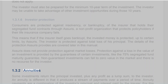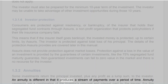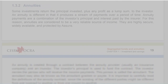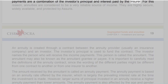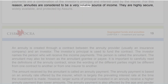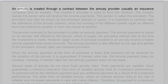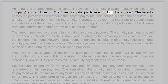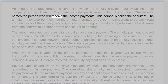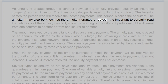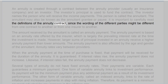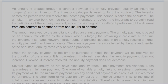Section 1.3.2: Annuities. Some investments return the principal invested plus any profit as a lump sum, but an annuity is different in that it produces a stream of payments over a period of time. Annuity payments are a combination of the investor's principal and interest paid by the insurer, making annuities a very reliable source of income — highly secure, widely available, and protected by Assuris. An annuity is created through a contract between the annuity provider (usually an insurance company) and an investor. The investor names the person who will receive the income payments — this person is called the annuitant, also known as the annuitant grantee or payee.